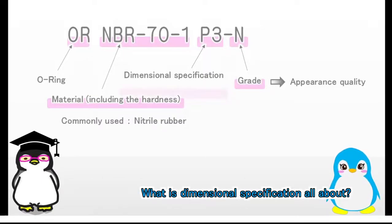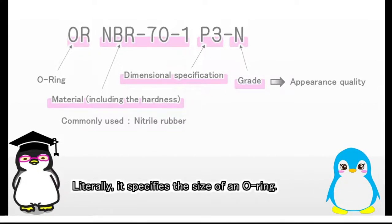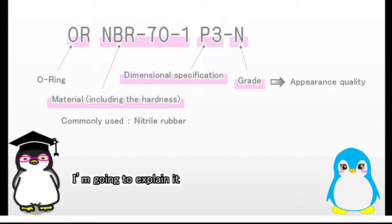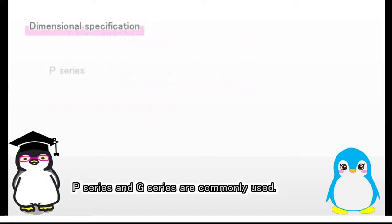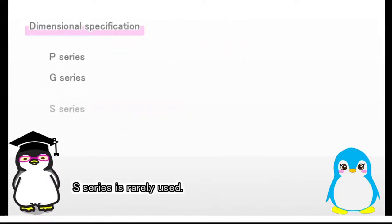What is dimensional specification all about? Literally, it specifies the size of an O-ring. I'm going to explain it based on the O-ring standard in Japan, but the theories don't matter with where you are. P-series and G-series are commonly used. S-series is rarely used. V-series is for vacuum.